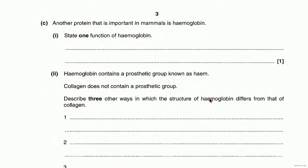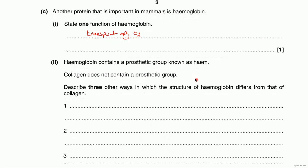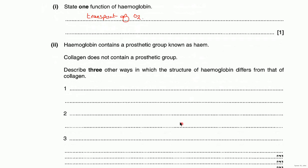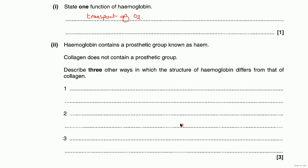Next is about hemoglobin. State one function of hemoglobin — that's the transport of oxygen. Hemoglobin does have other properties and functions, which you'll learn about in unit two. Hemoglobin contains a prosthetic group known as heme; collagen does not contain a prosthetic group. Describe three other ways in which the structure of hemoglobin differs from that of collagen.